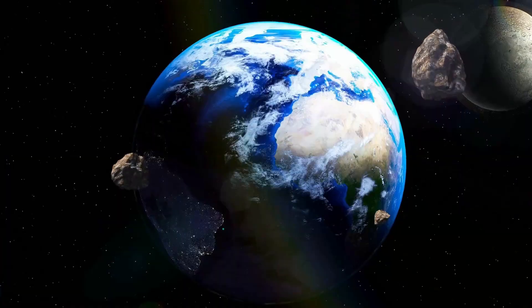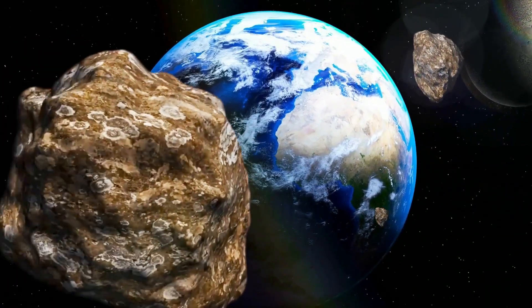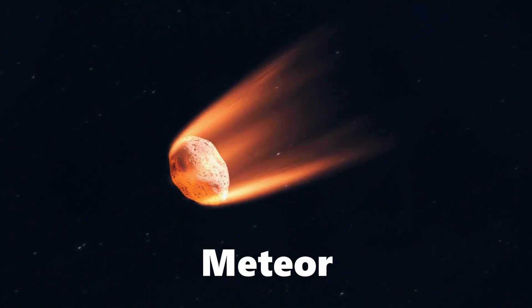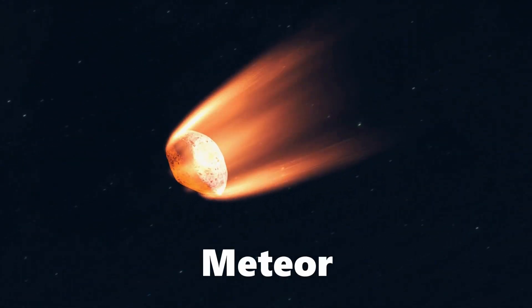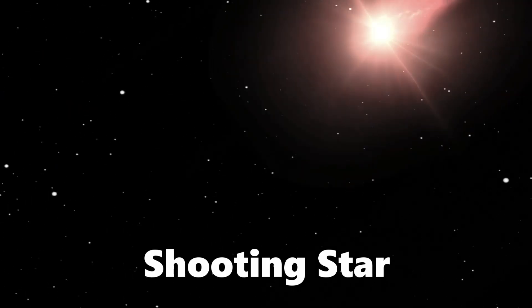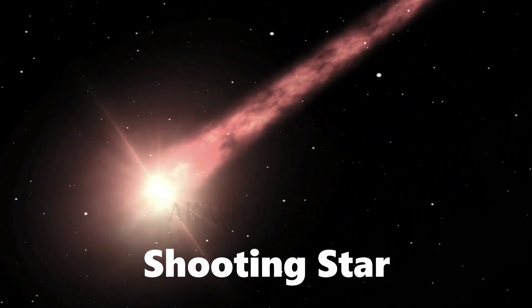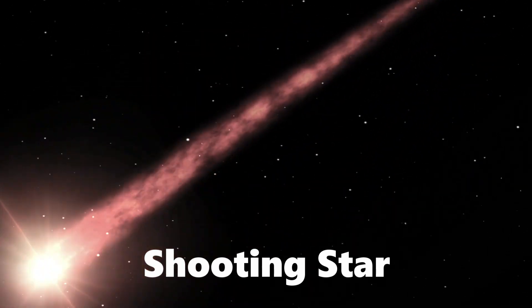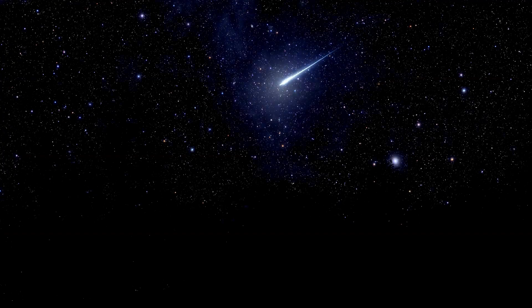When a meteoroid falls into Earth's atmosphere and begins to burn up, it is called a meteor. We also know these meteors as shooting stars, because from the ground, they look like stars which are moving at a very fast speed. Really, they are meteors burning.